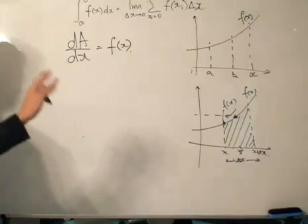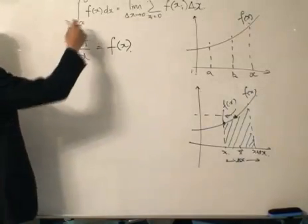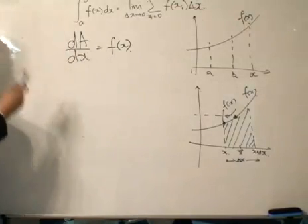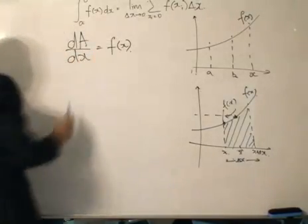Sorry, my mistake. Let's clear this up. The function A is one of the anti-derivatives of function f(x).